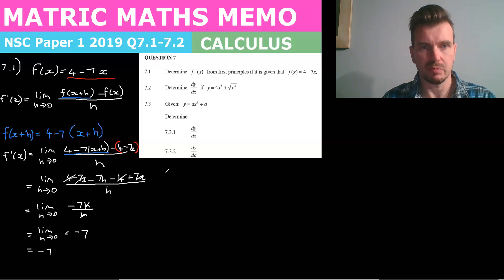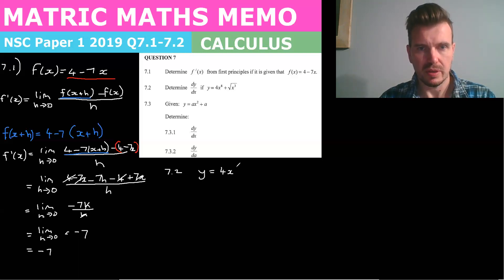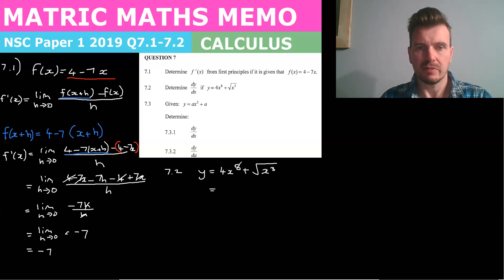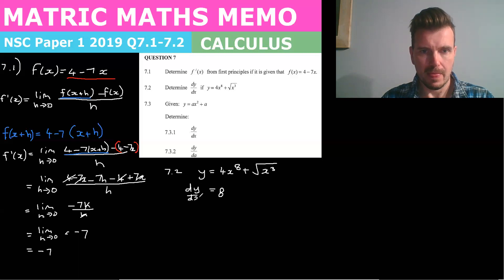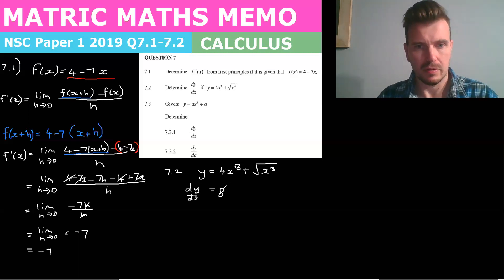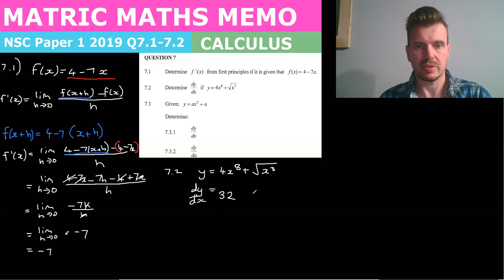Now let's do 7.2. dy/dx, where y equals 4x to the 8 plus the square root of x cubed. Remember when we are finding the derivative we do the exponent times the number in front of the x. So 4 times 8 is 32. Then dy/dx equals 32 and then you take one off the exponent.